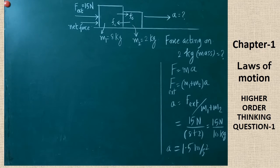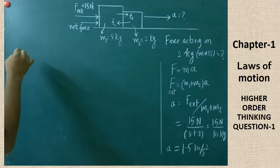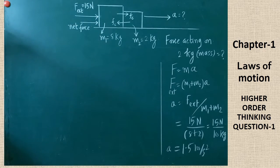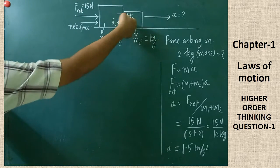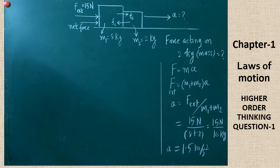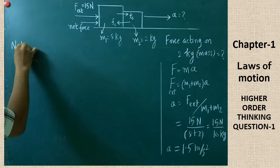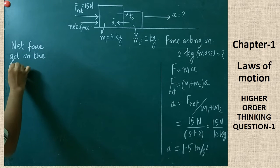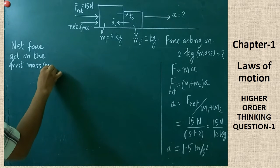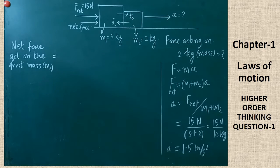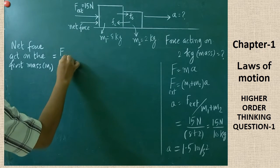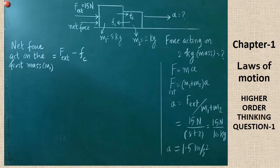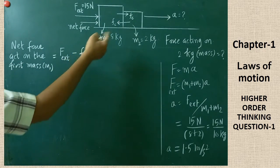Next, I am going to take the first body and calculate the net force acting on it. On the first body, two forces are acting: the external force and the contact force due to the second body. The external force is acting in one direction and Fc is acting in the opposite direction. Therefore, Fc must be taken in the opposite direction when writing the net force equation for the first mass.